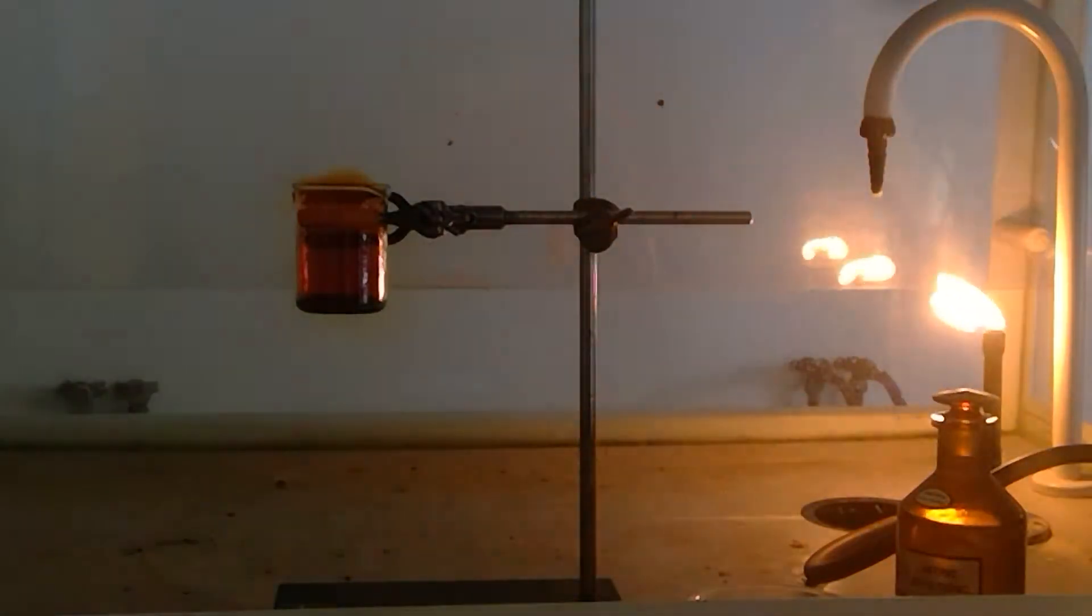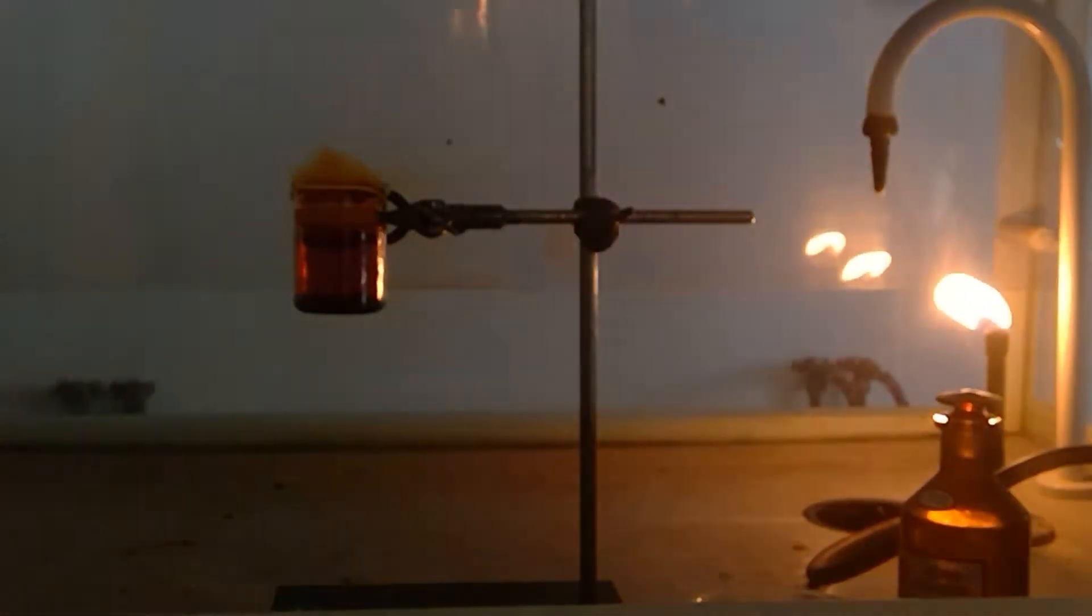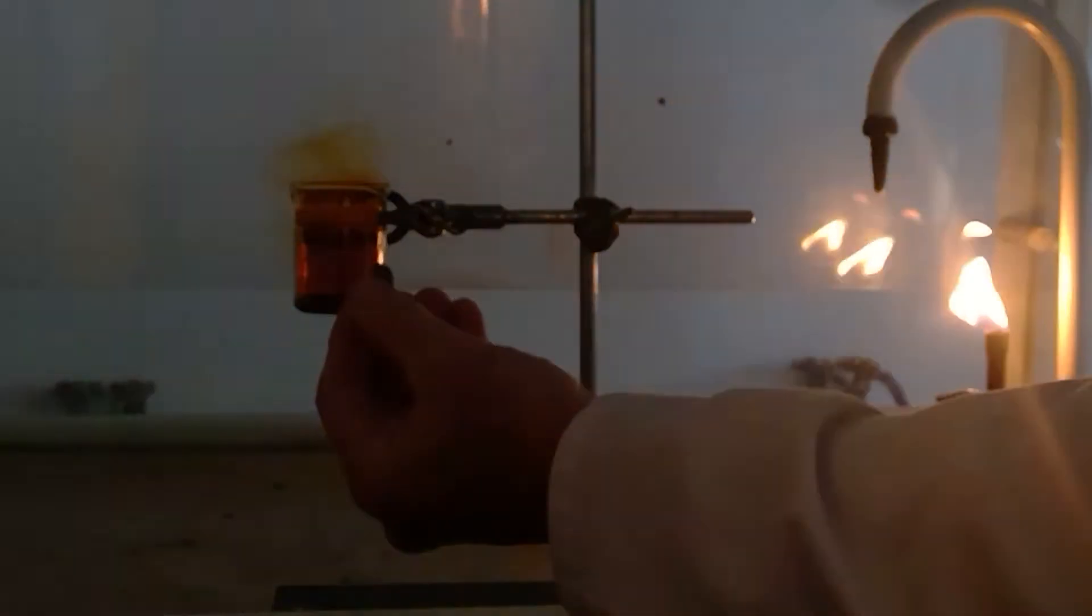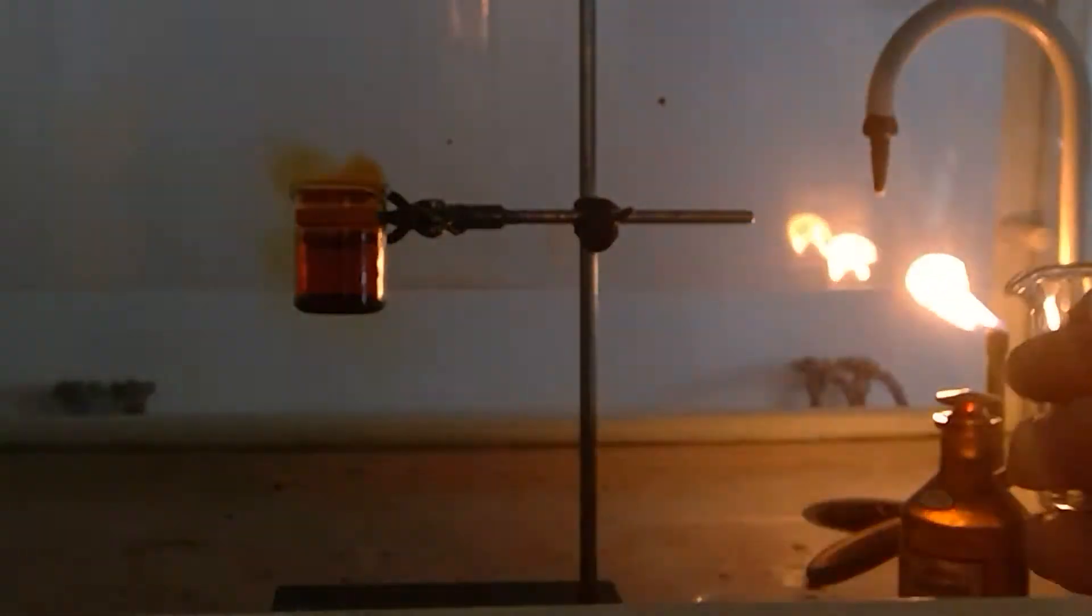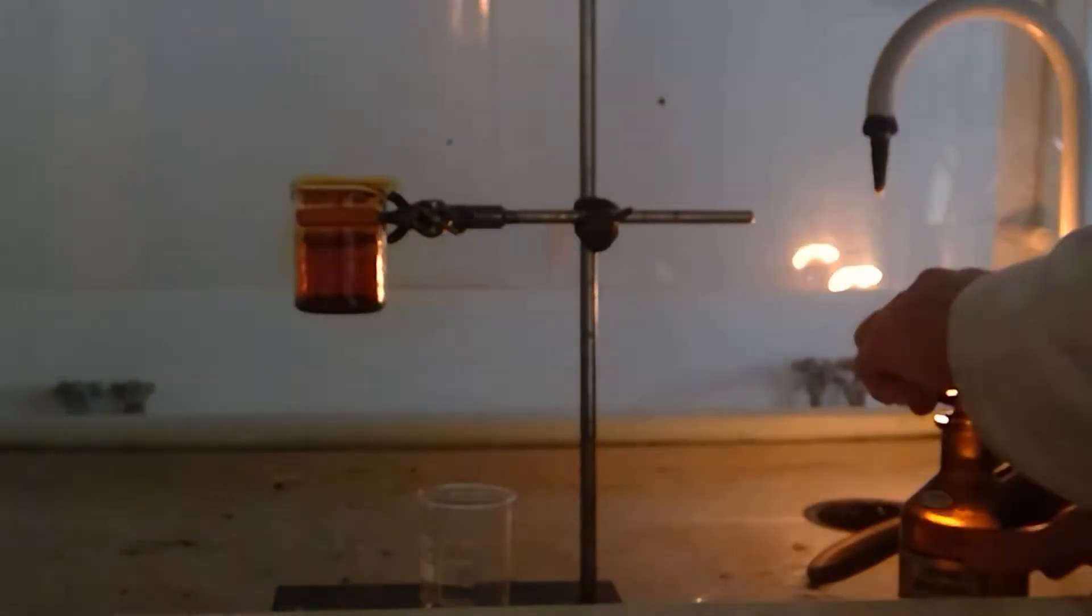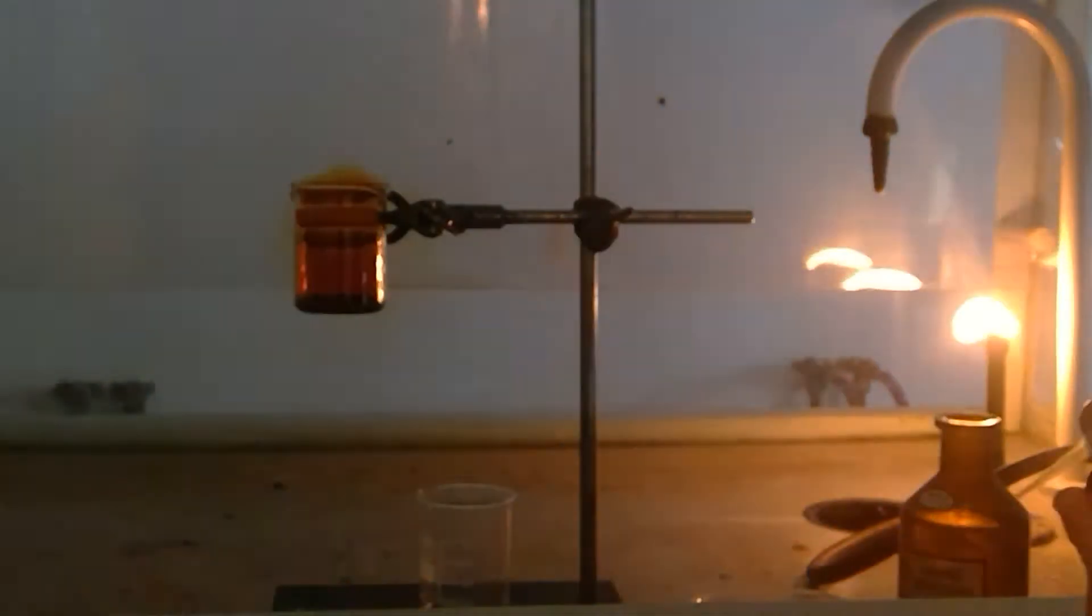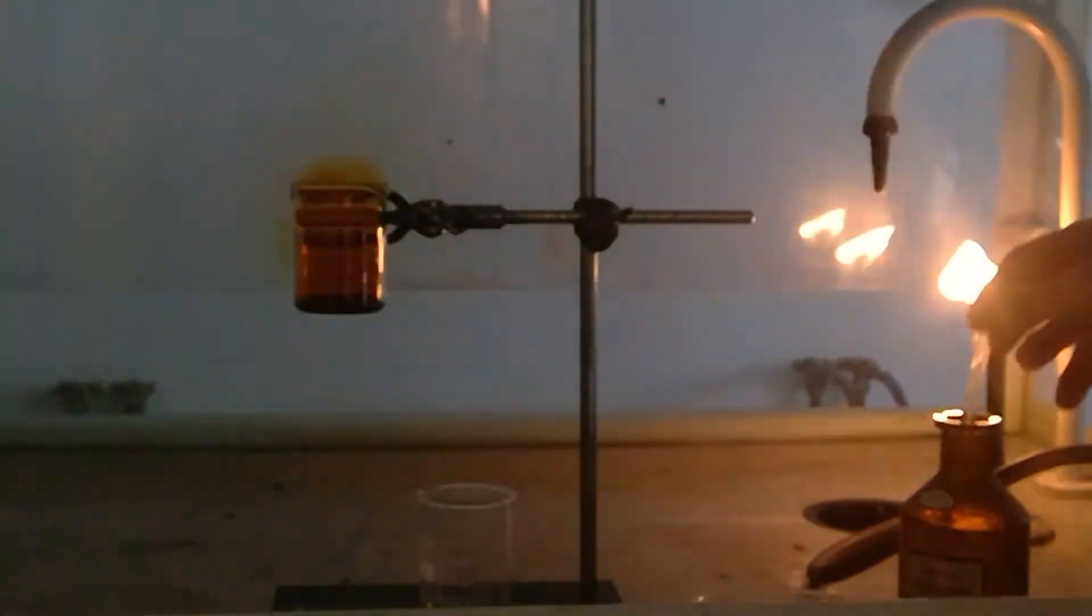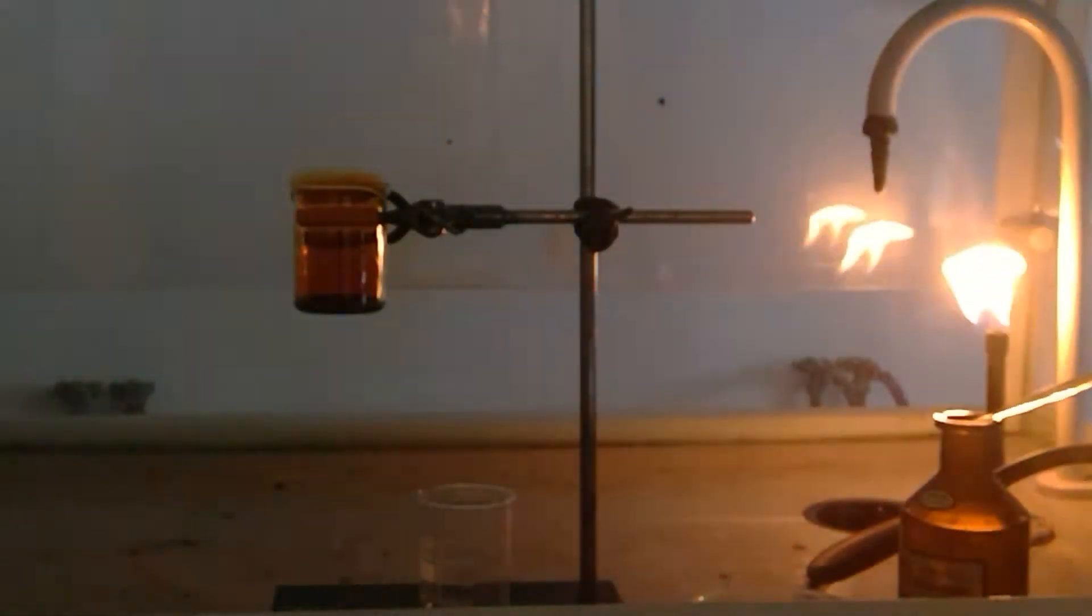This reaction can also be done with any copper containing solid. So for example with a coin that is mainly made of copper or has a high percentage of copper we could do the same type of experiment and add concentrated nitric acid to the alloy that contains the copper in the coin. This is a very effective way of throwing away your money.